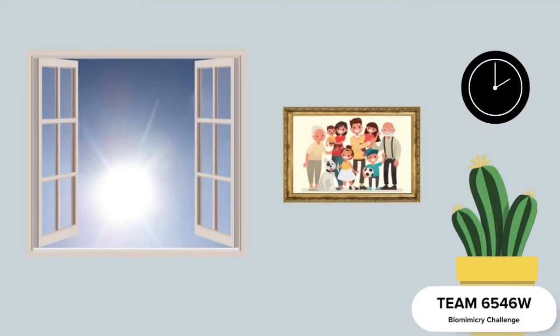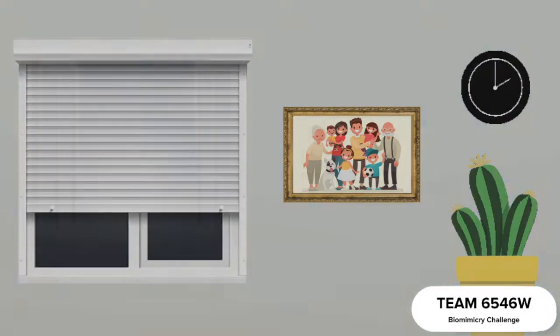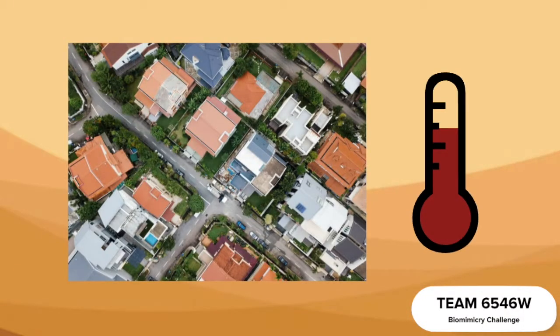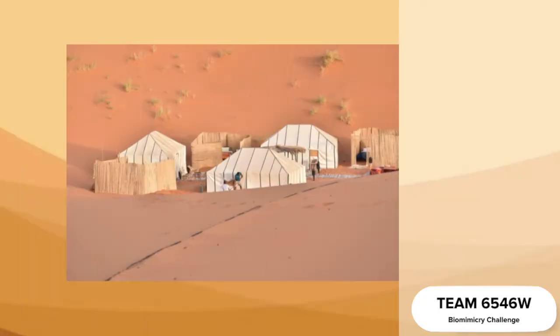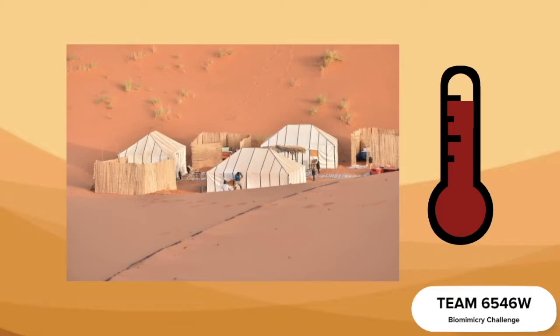One of the most popular methods houses use to prevent light and therefore heat from entering in excessive amounts are window blinds. While in urban homes, these provide shelter by partially blocking light, since this project is catered towards tents in desert climates, using blinds isn't as effective when faced with such high temperatures.